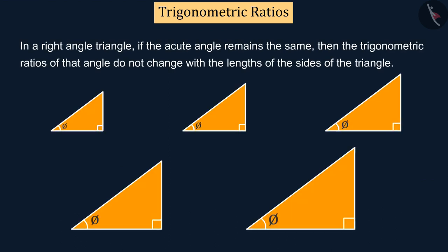Based on this activity, we can say that in a right angle triangle, if the acute angle remains the same, then the trigonometric ratios of that angle do not change with the lengths of the sides of the triangle.